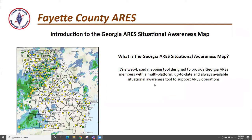So what is it? The situational awareness map is really nothing more than a web-based tool designed to help Georgia ARIES members — really any ham radio operator — providing them with a multi-platform, up-to-date, always-available situational awareness tool. It exists to support ARIES operations, but really it's public on the web. Anybody can get to it. Anybody can use it.